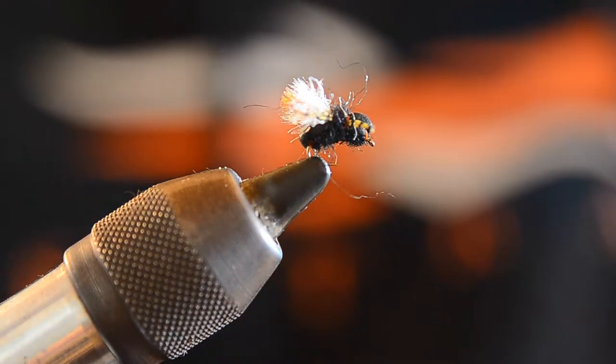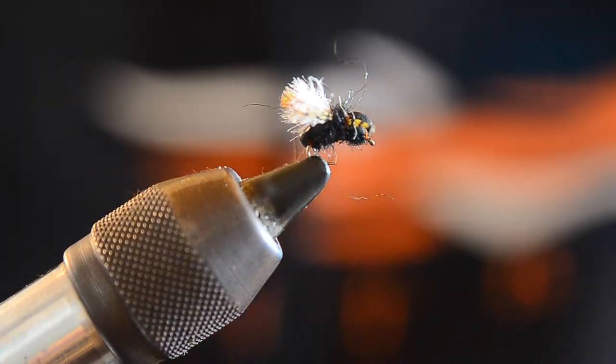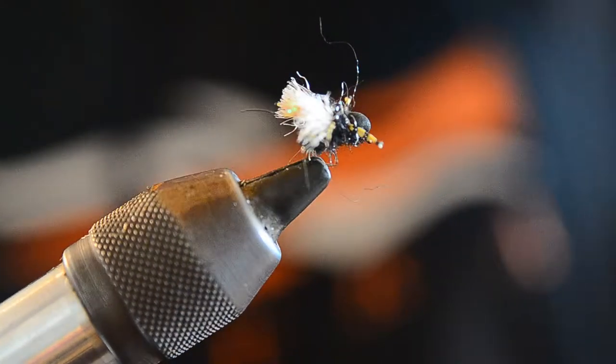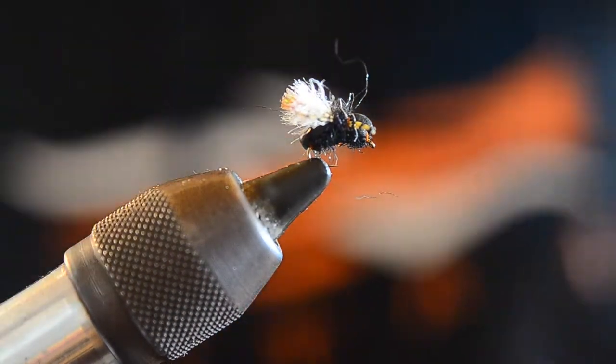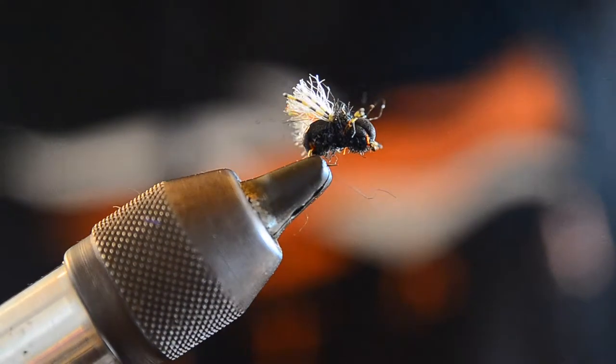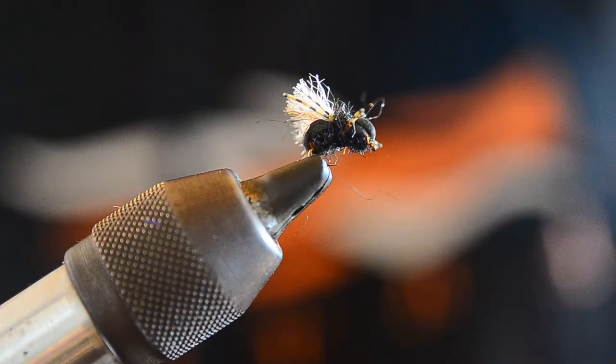Today's fly that we're going to tie is a black foam bodied flying ant pattern. This one's relatively small, tied on a size 16 scud hook. It's just a great little attractor ant pattern.